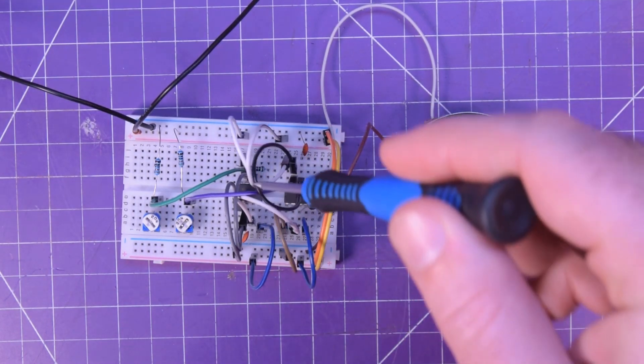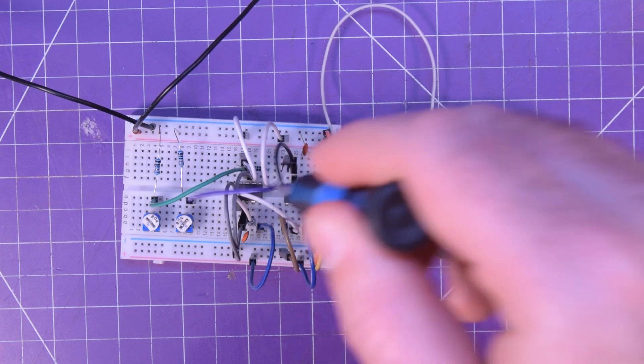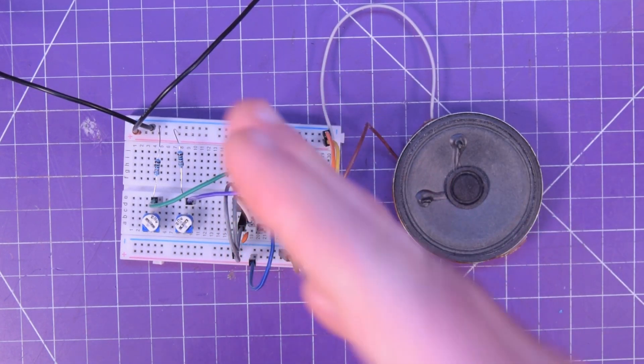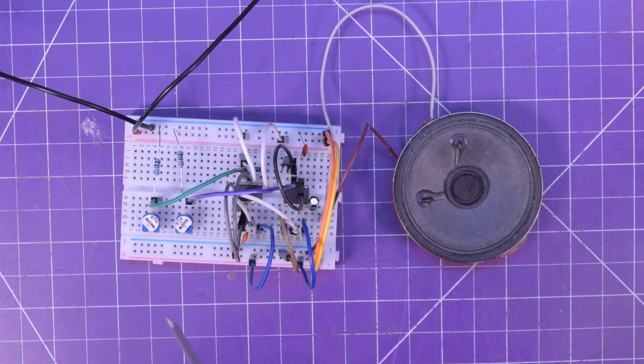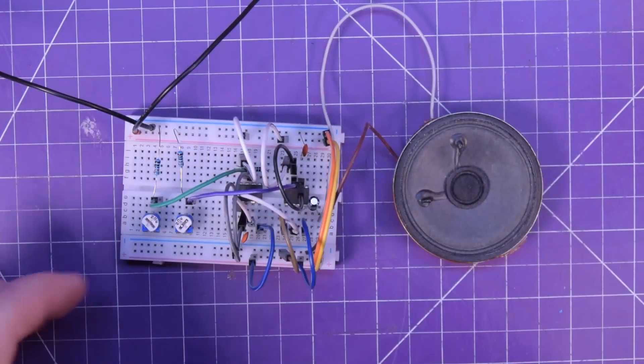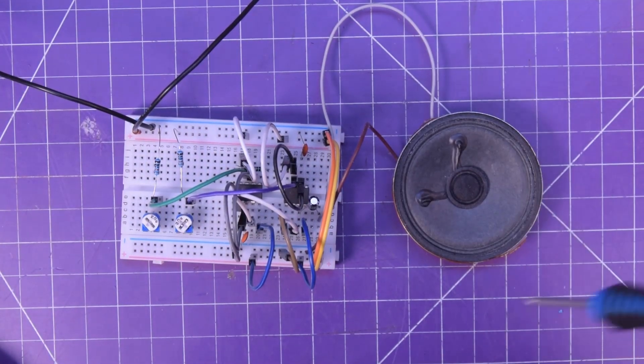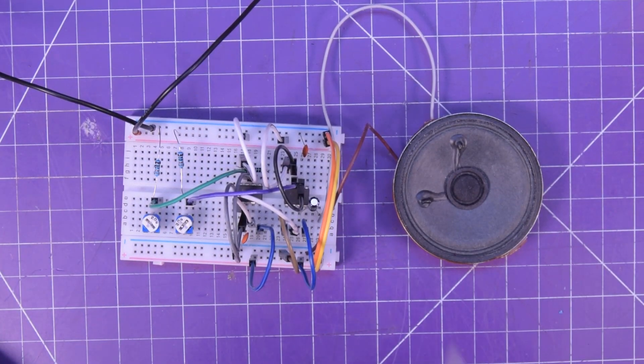I think the basis is that one 555 timer is making the other one sort of like cutting it on and off at a certain frequency. And when those frequencies mesh, that's when you get those kind of steps, discrete steps you're hearing. But that's not really why you're here.